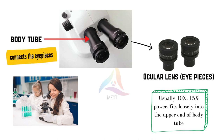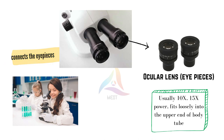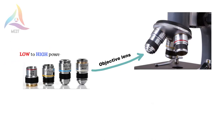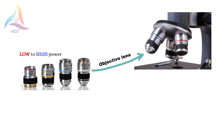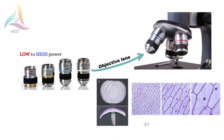The body tube connects the eyepiece lens to the objective lens. The objective lens typically has three or four lenses with different magnifications such as 4x, 10x, 40x, and 100x, ranging from low power to high power. The shortest lens is the lowest power, and the longest one is the lens with the greatest power.